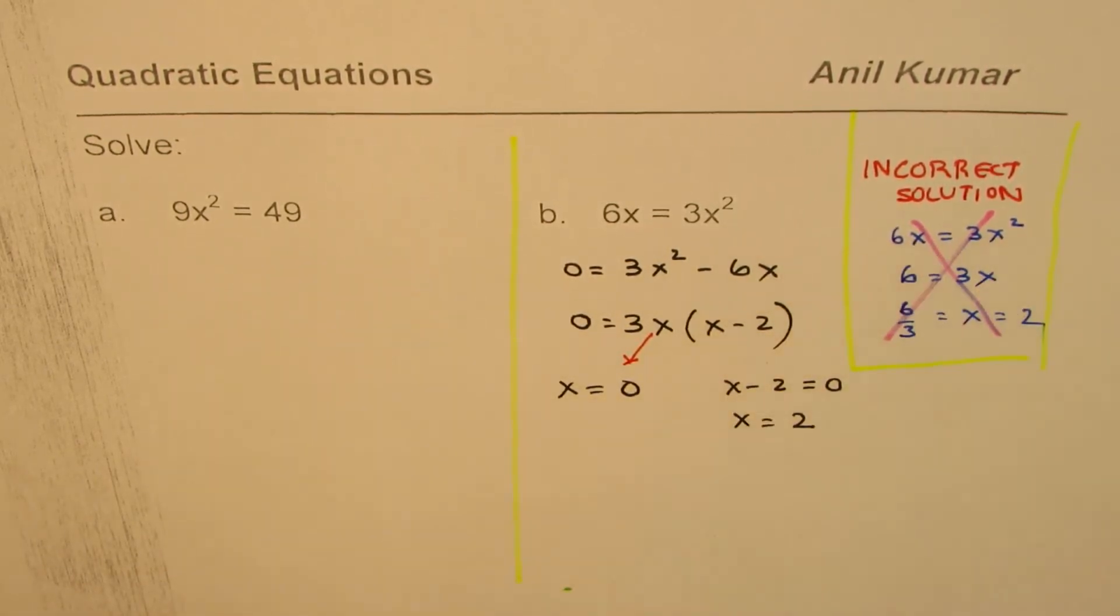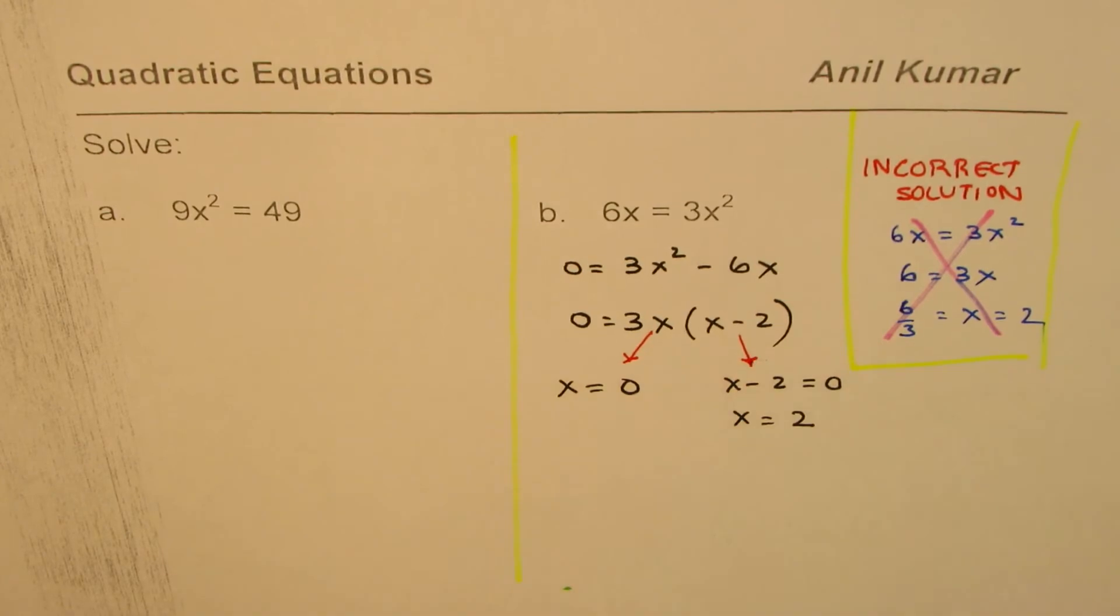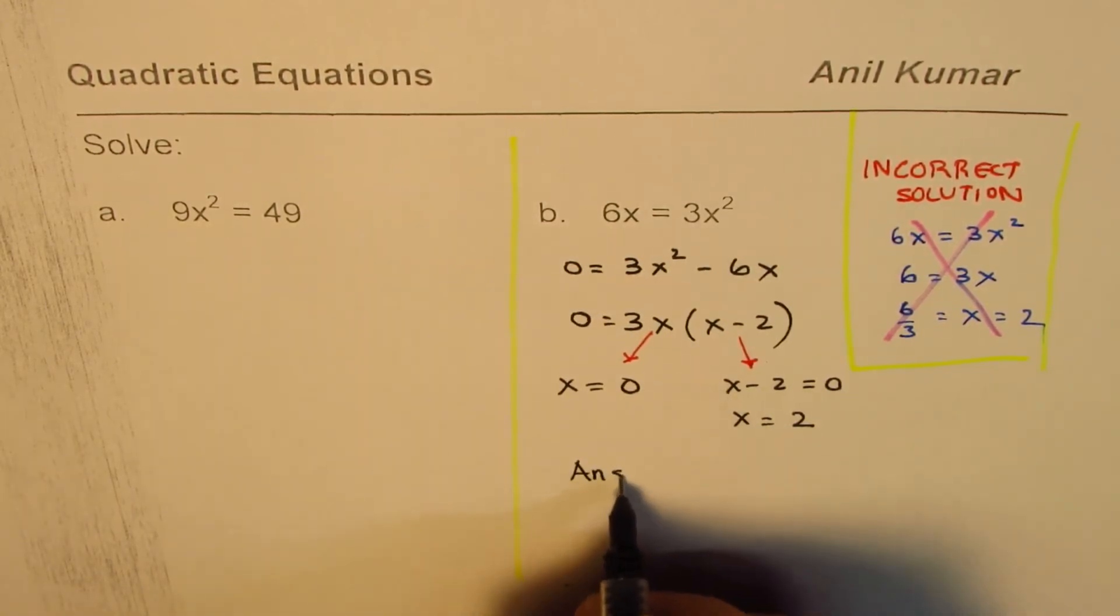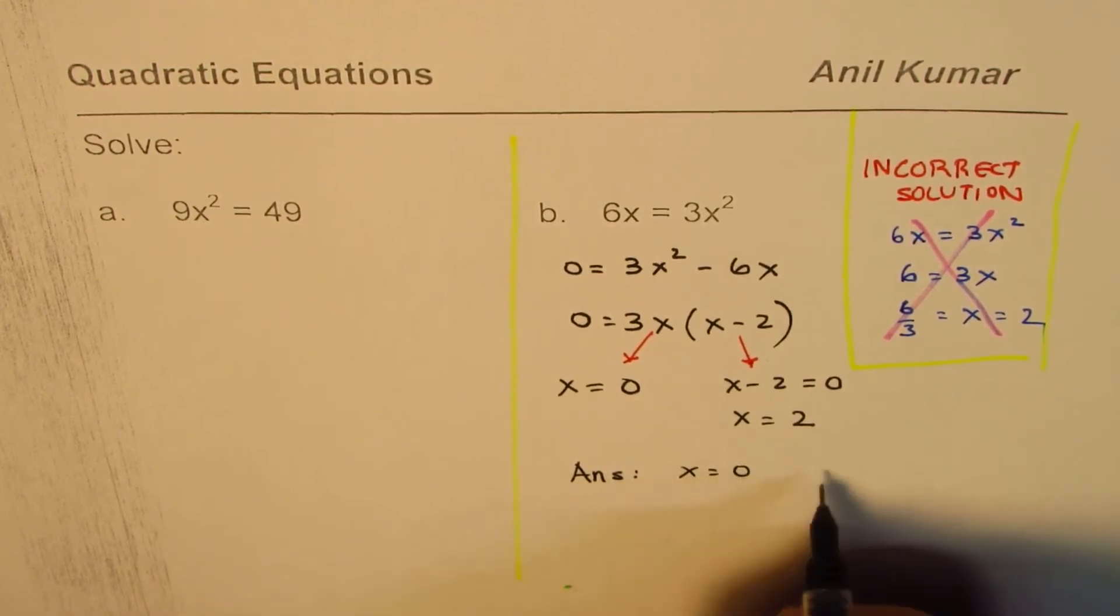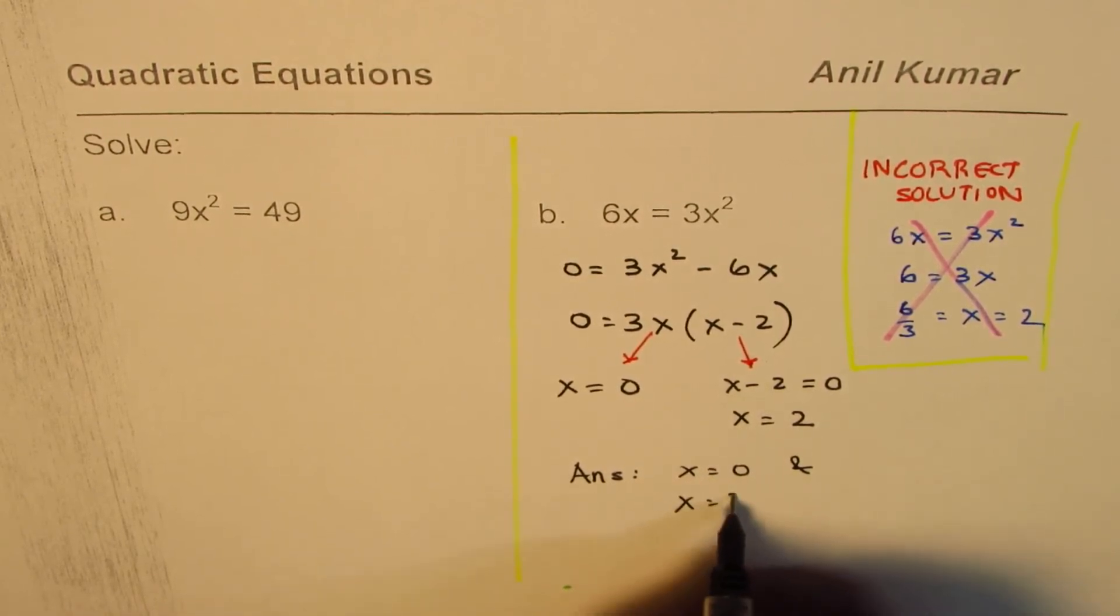You just cancelled one of those x's, you cancelled a solution. That is what I am trying to emphasize here. I hope this point is absolutely clear. So we have two solutions. We can always write down our answer as x equals to 0 and x equals to 2.